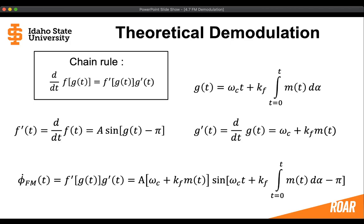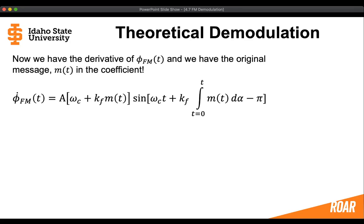We can see that in front of the sine wave, there is a term that contains the message by itself. We now have the derivative of the frequency modulated signal, and we have the original message m(t) in the coefficient. So we're definitely on the right track to being able to demodulate and recover the original message.